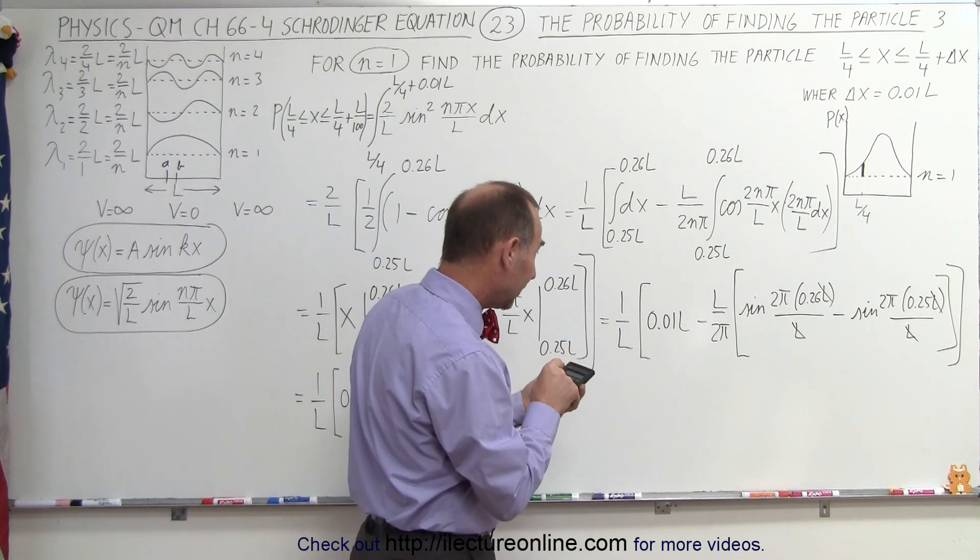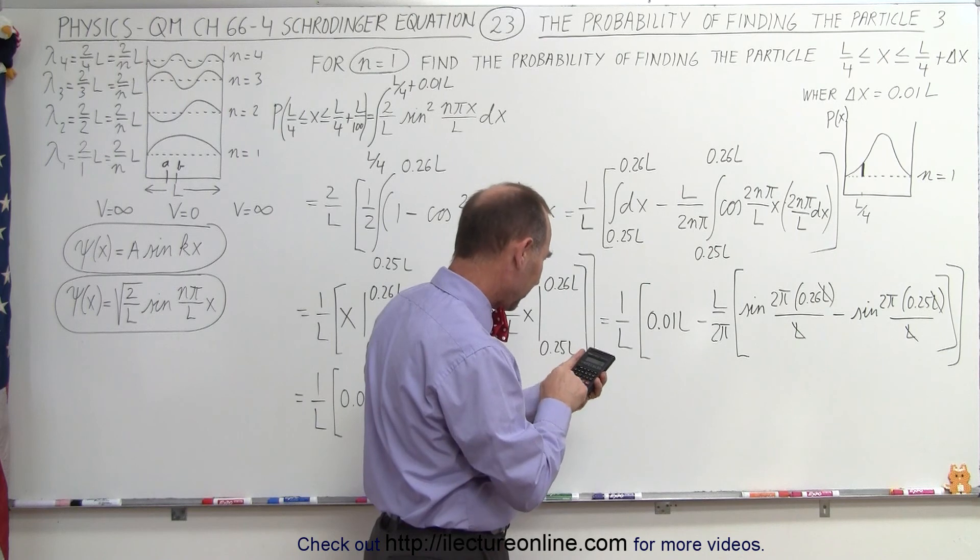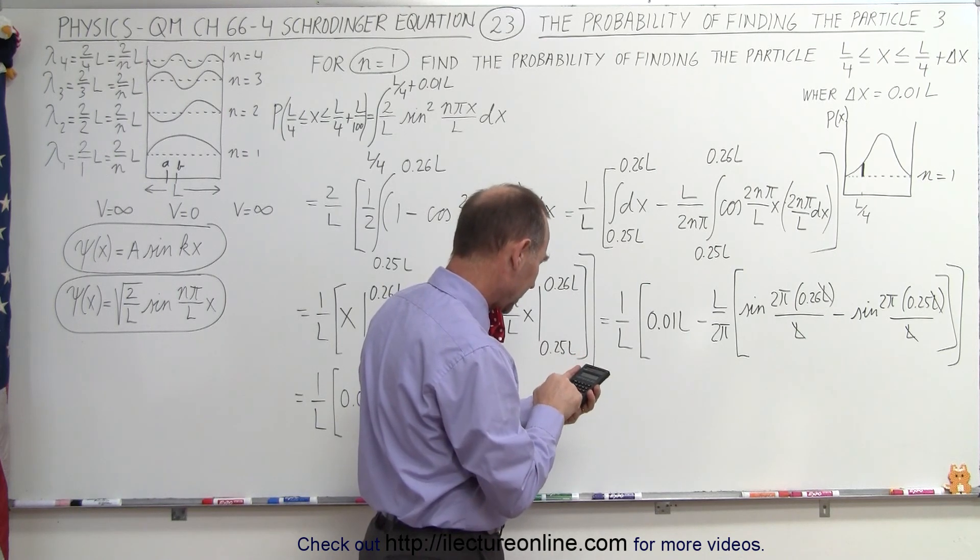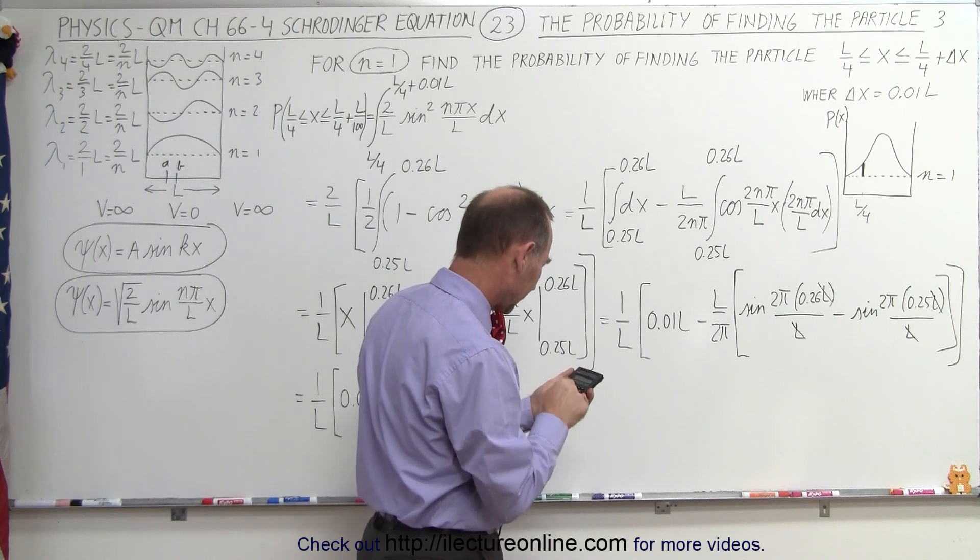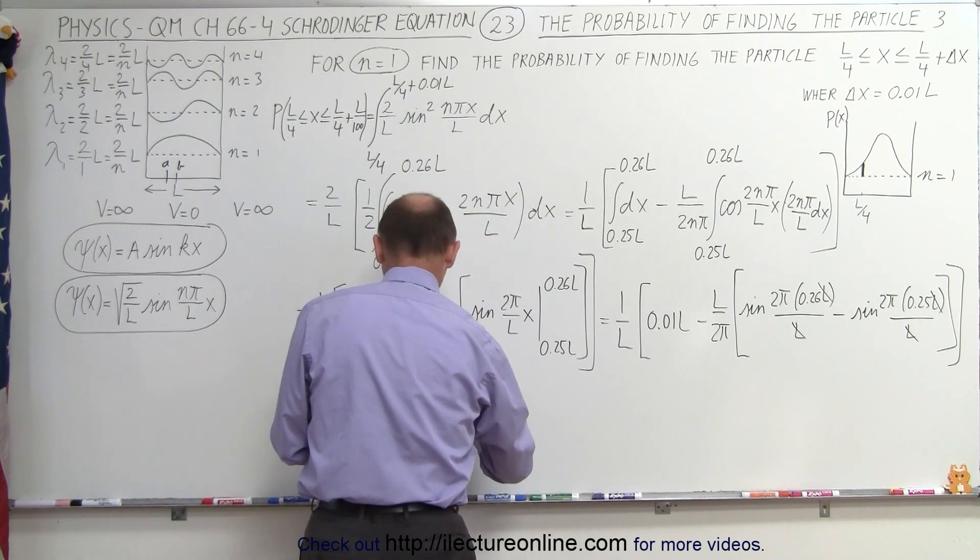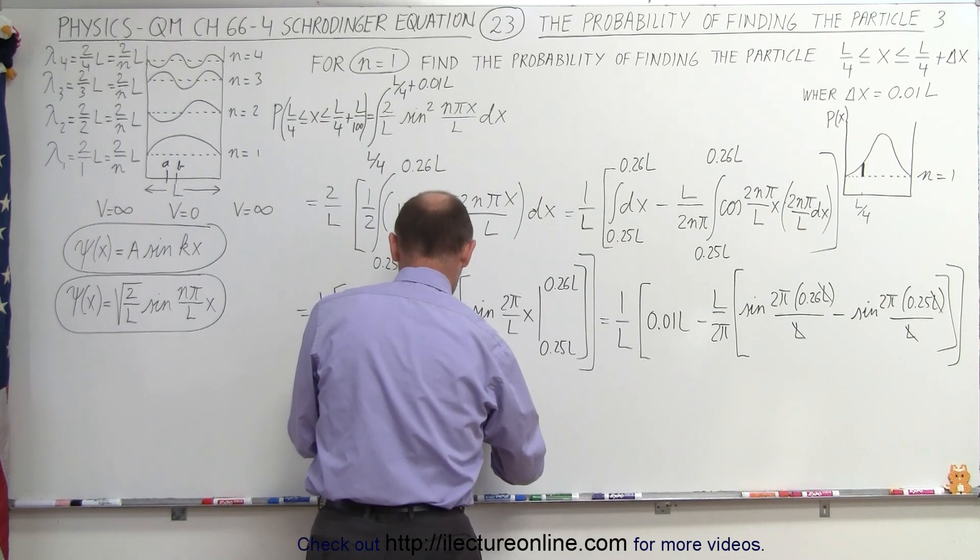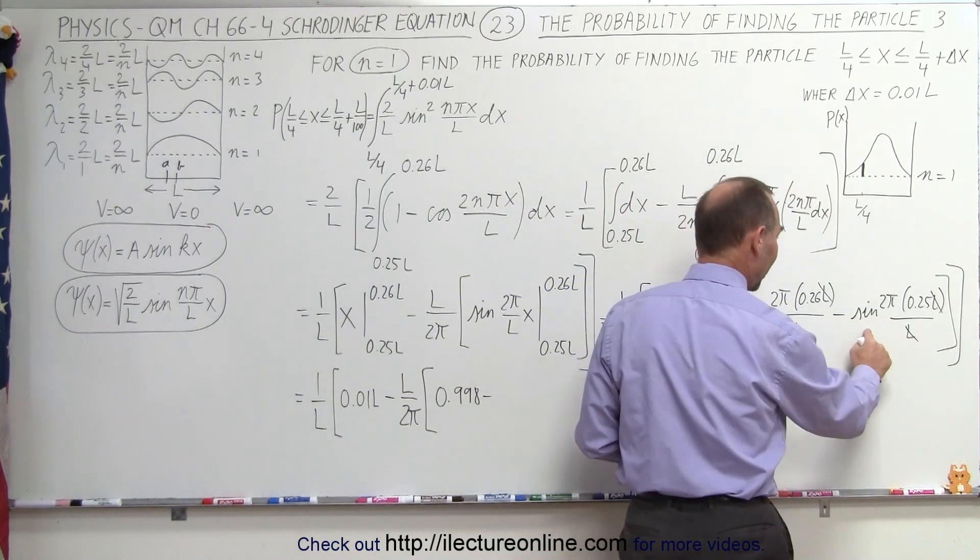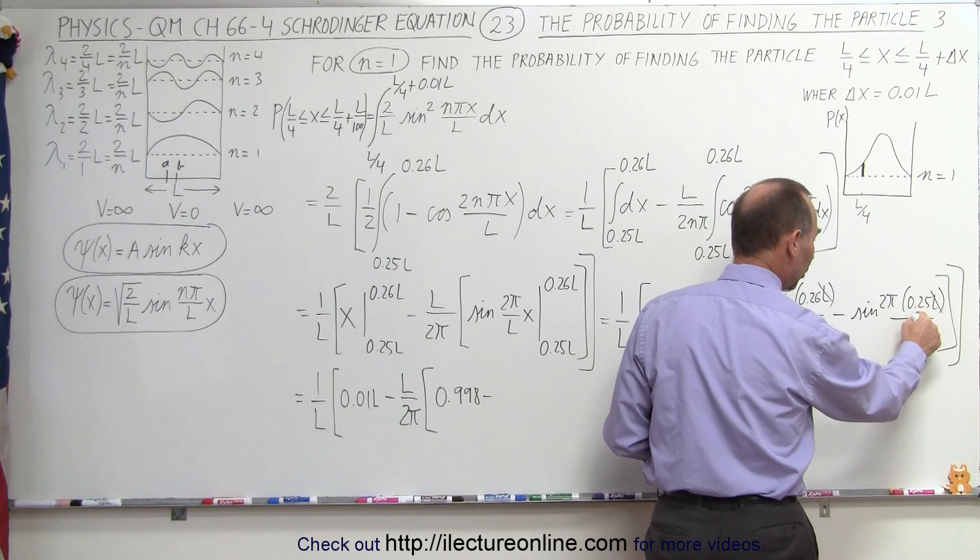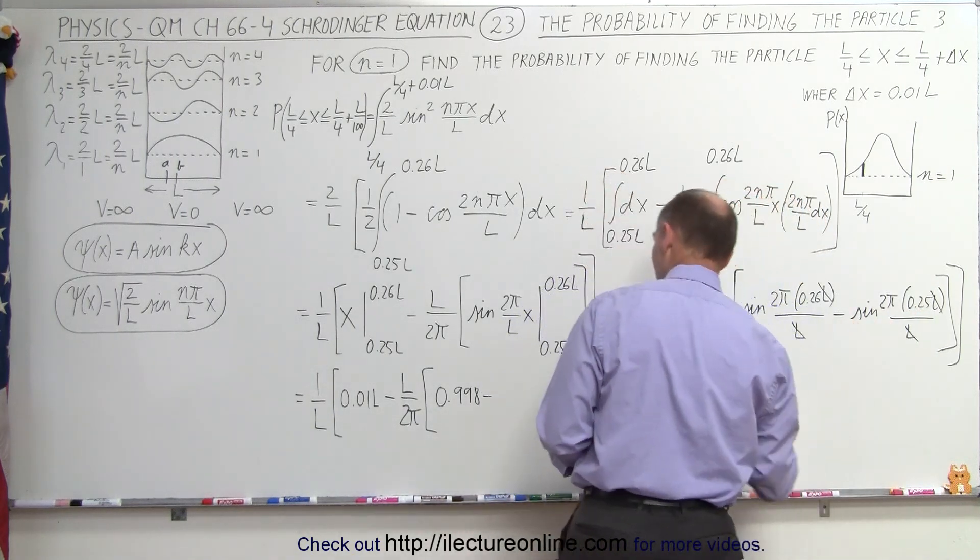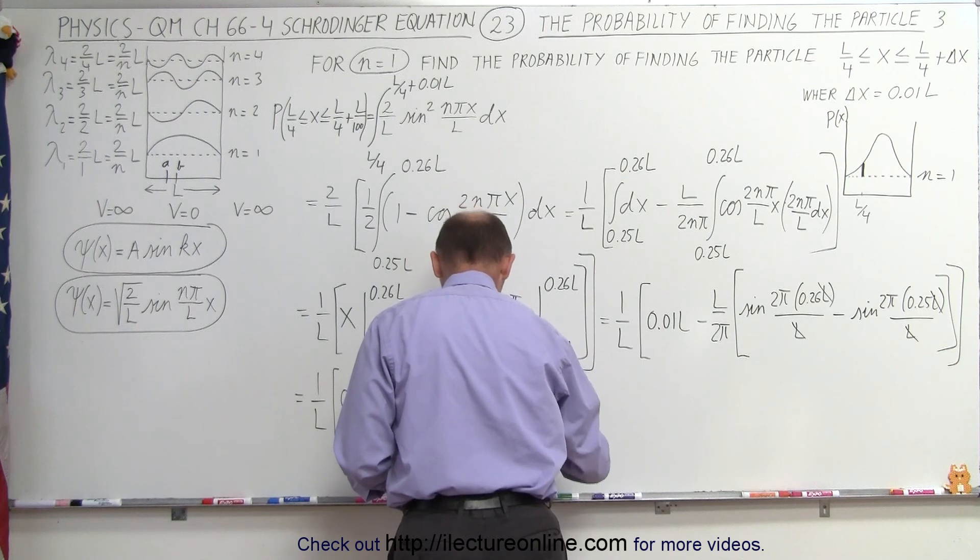So we have 2 times 0.52 times pi and take the sine of that. So let me write that down. So that is 0.998 minus. Now when I plug in, when I subtract the sine of 2 pi times 0.25, that would be a half a pi, the sine of a half a pi is equal to exactly 1.